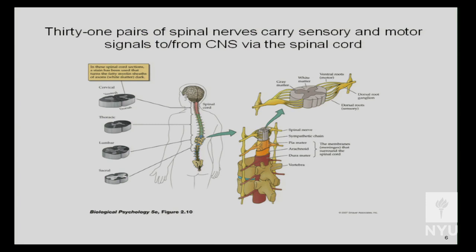The dorsal root carries sensory information — the information coming from the outside and coming in. The ventral root is all the motor output; these are the axons that are commanding your muscles to move. So each spinal nerve has both a dorsal and a ventral root, subdivided by whether they're bringing sensory input in or motor output out.